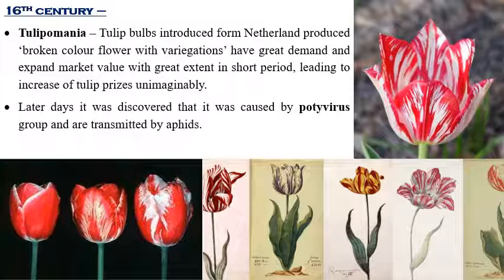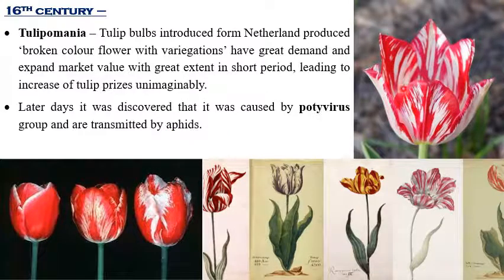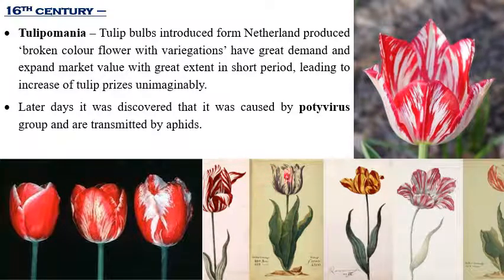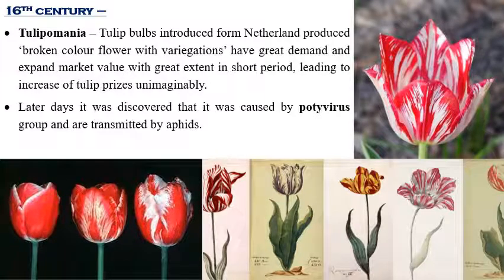Due to the color variation, the market price of tulips increased unimaginably. With advanced detection techniques, we now know this was caused by a potyvirus, transmitted by aphids. The beautiful color-breaking effect made these tulips fetch more market price than usual. These were documented in diagrams drawn by different scientists and authors. This is called color-breaking, caused by potyvirus — one of the few beneficial viral diseases.